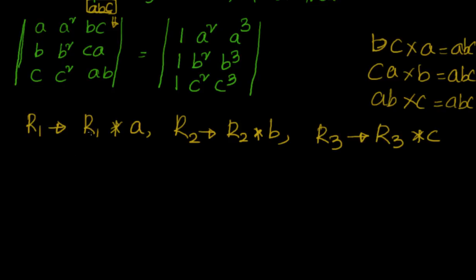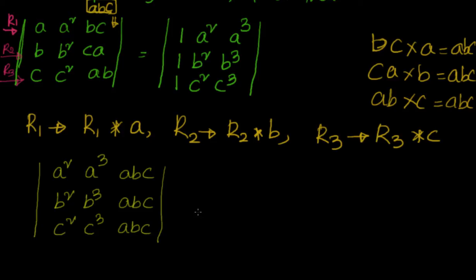Now let's see how it looks like. R1 into A becomes A into A equals A square, A cube here, and ABC. Similarly, multiply second row with B to get B square, B cube, ABC. Third row multiplied with C gives C square, C cube, and ABC. Now you can see ABC is common.